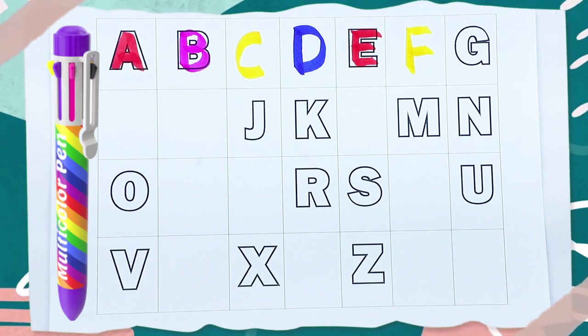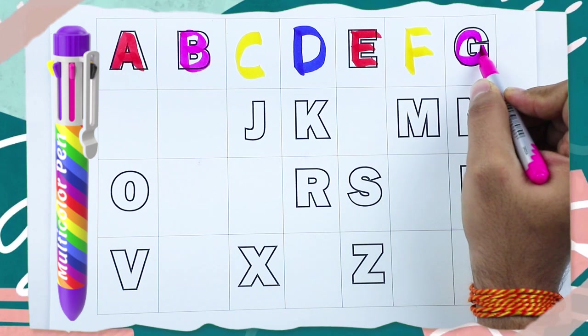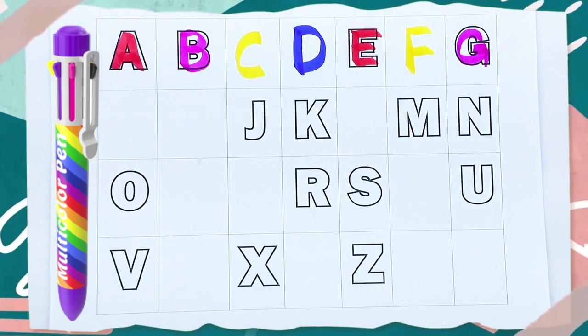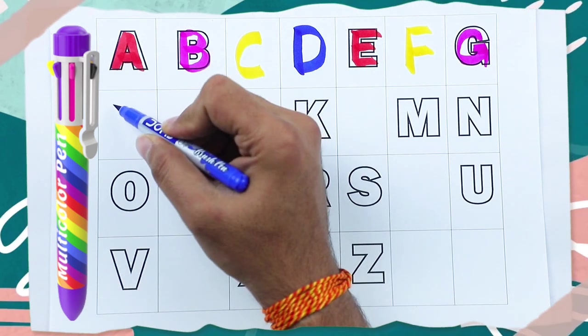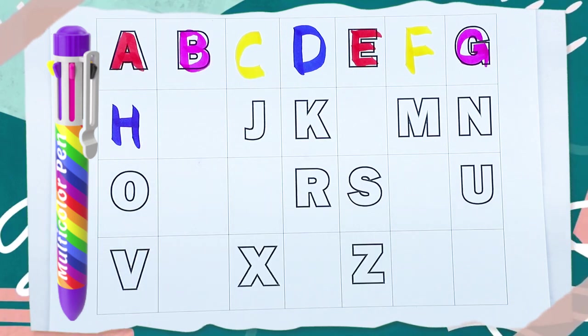What next? G. Pink color, G. G for goat. What next? Next is H. H for hand. What next?